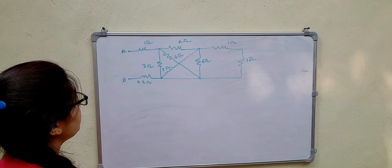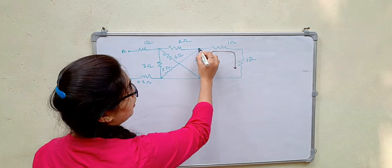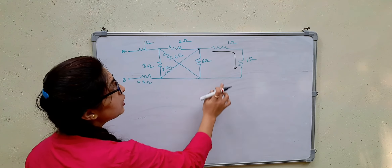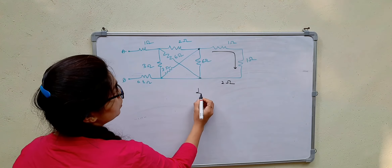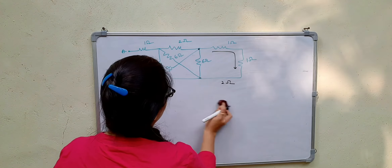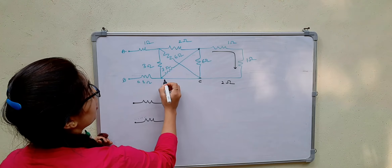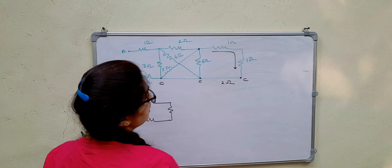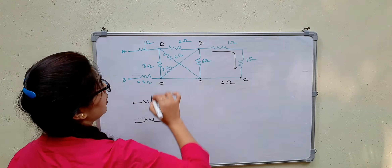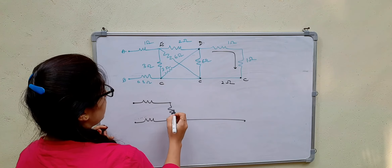For the final problem, find R_AB. Two 1-ohm resistors are in series — that gives 2 ohms. Then we have 2 ohms, 6 ohms, and other resistors in the redrawn circuit.